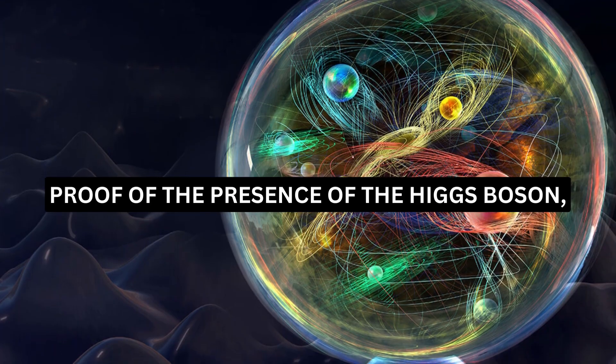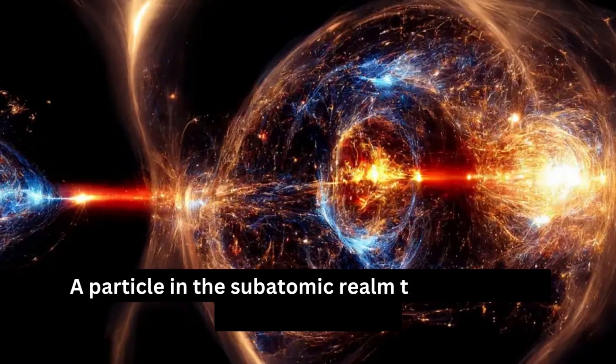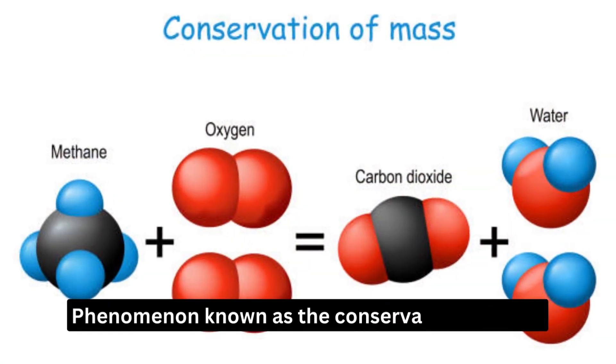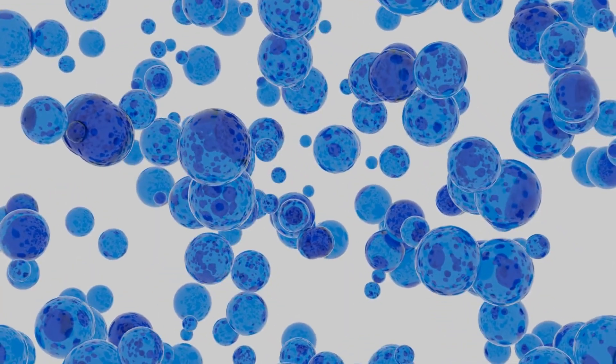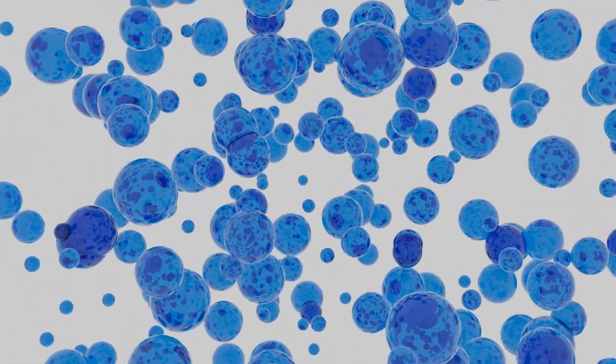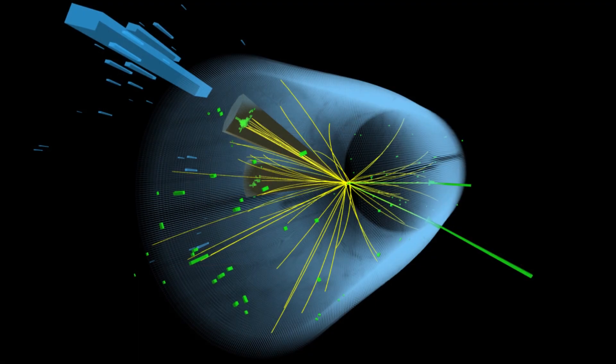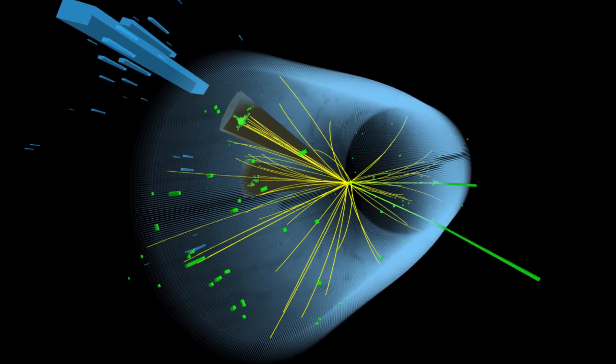Proof of the presence of the Higgs boson, a particle in the subatomic realm that aids in the explanation of the phenomenon known as the conservation of mass. The three new subatomic particle kinds that were revealed today at a CERN seminar aren't quite as groundbreaking as the discovery of the Higgs boson.